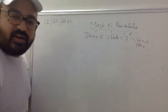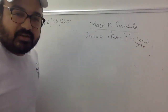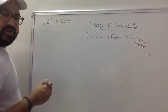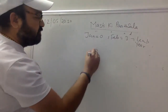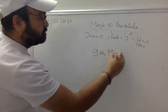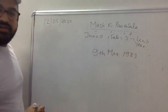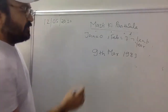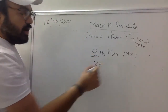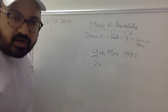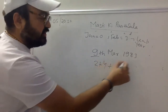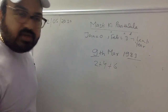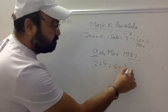एक और important लेते हैं: 9th March 1983. March का code है 4 (from 144). 9 को 7 से divide करो — remainder 2. 83 को 7 से divide करो: 7×11=77, remainder 6. Leap year: 83 को 4 से divide करो — quotient 20.